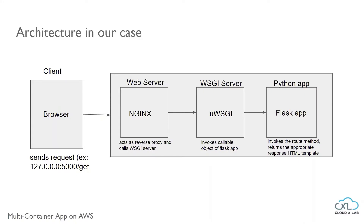The UWSGI server invokes a callable object of the Flask app. The Flask app invokes the route method and returns the appropriate response HTML template. We need to configure the UWSGI server file to let it know what the callable object is that it needs to invoke, where it is located, etc.